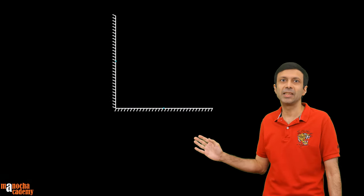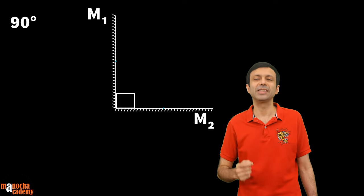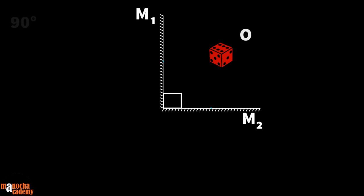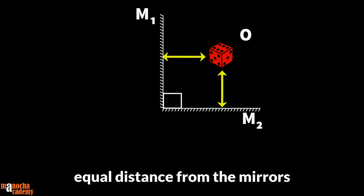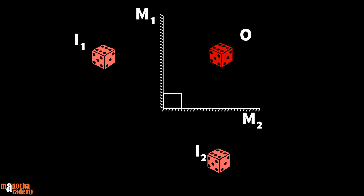Let's place an object like a dice symmetrically from the two mirrors — that is, at an equal distance from both mirrors — with the angle between the mirrors at 90 degrees. Due to reflection of light in mirror M1, the dice forms an image I1. And due to reflection of light in mirror M2, another image I2 is formed. Those are two images.